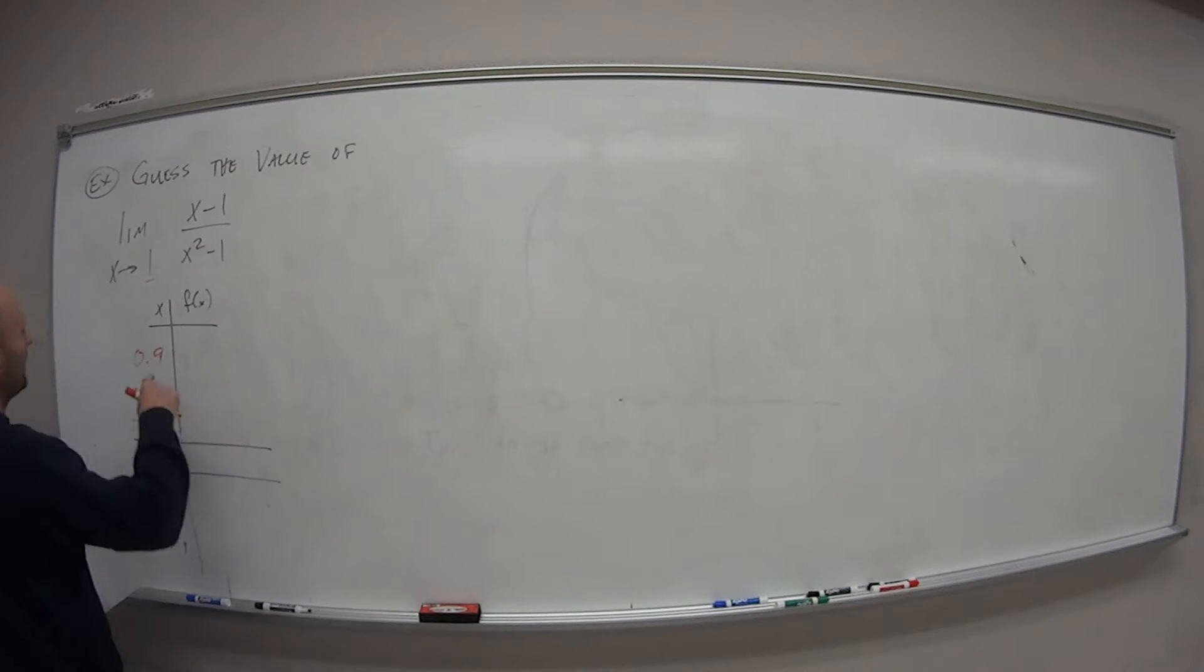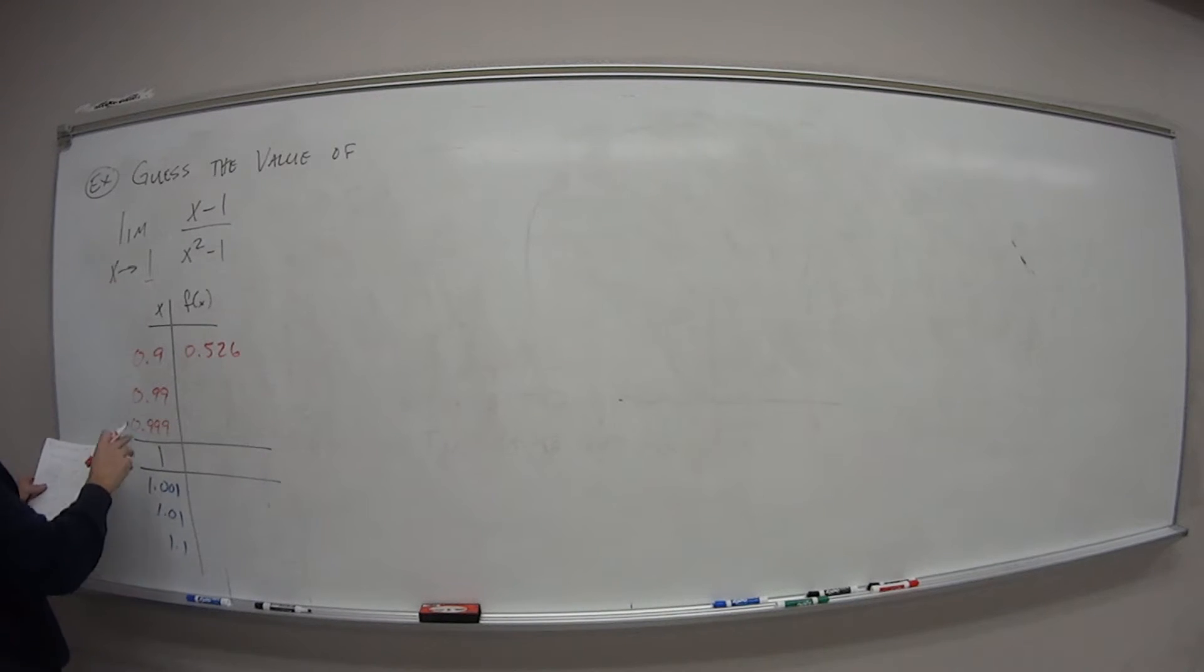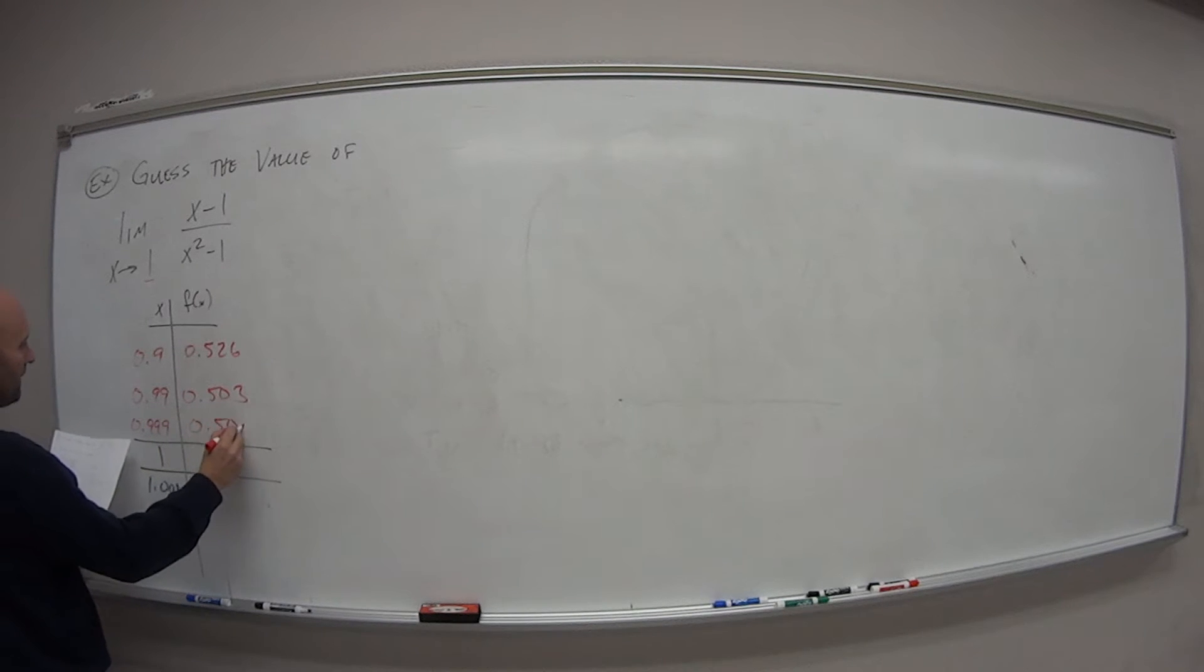So if I do this on the calculator, plug these values in and calculate it, for the first one you should get 0.526. For 0.99 when you plug it in, you should get 0.503. And 0.999 you should get 0.500.